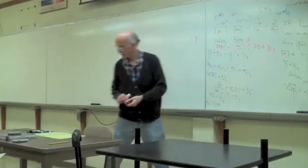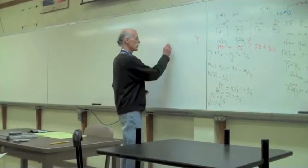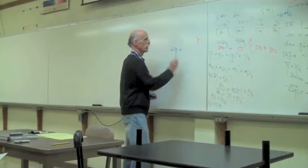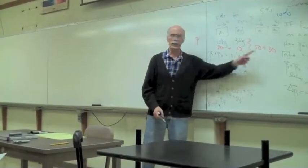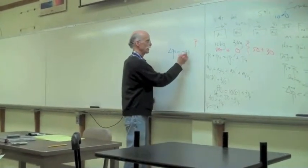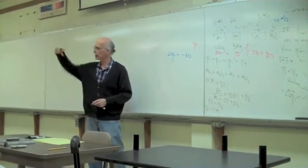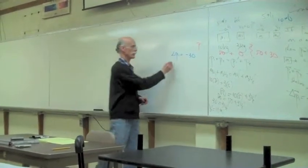But notice what happened in terms of changes. What's the change in momentum of mass 1? It decreased from 80 to 50. So, it had a negative 30. Basically, the momentum went down by 30. How about the second mass? Its momentum went up from 0 to 30.